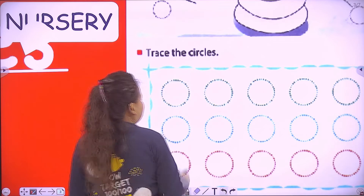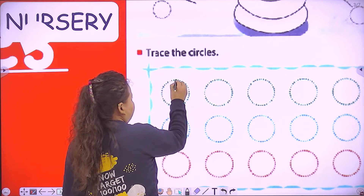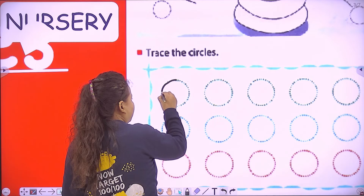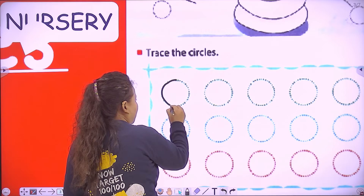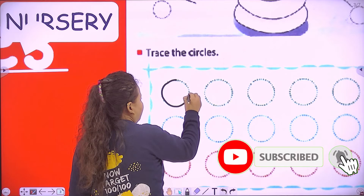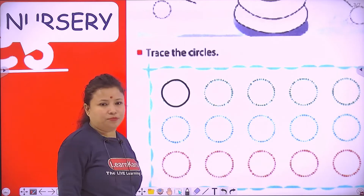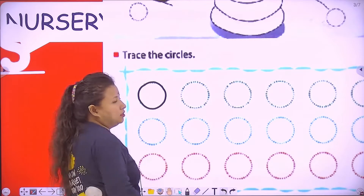So we have to start from the top, then go to the left side, then down, then up, then right side, and stop. That's how to make a circle.